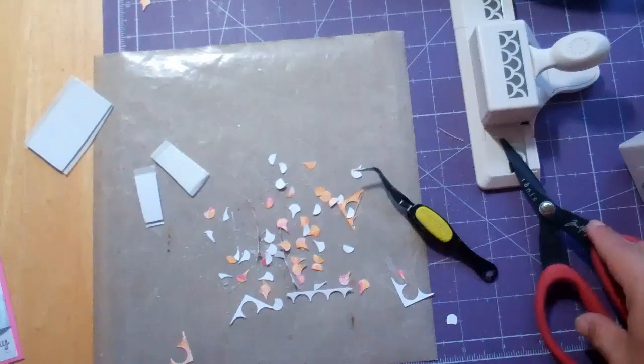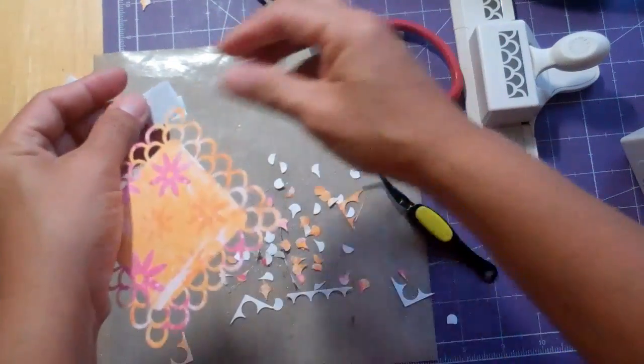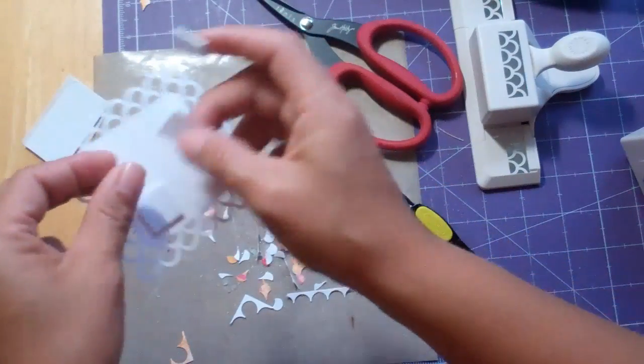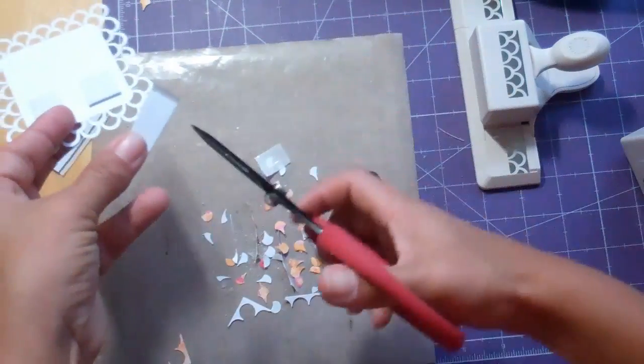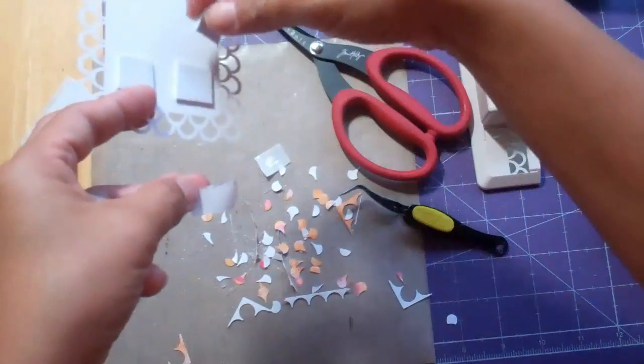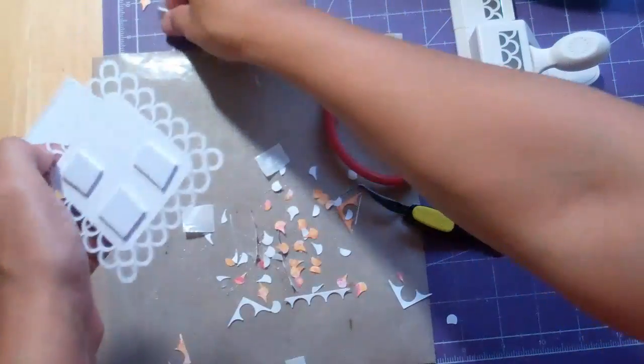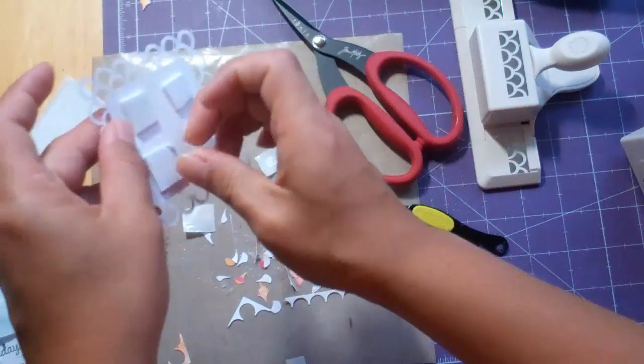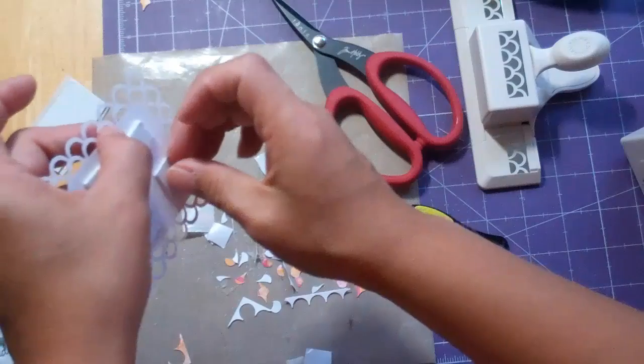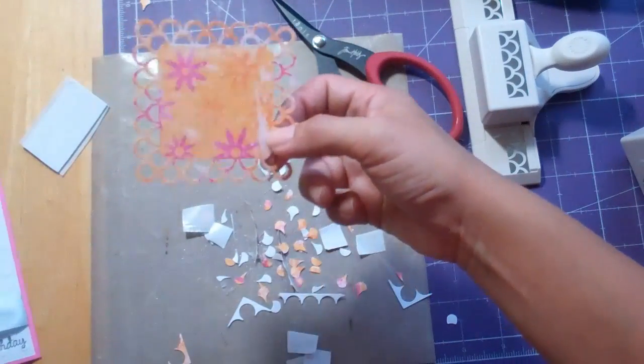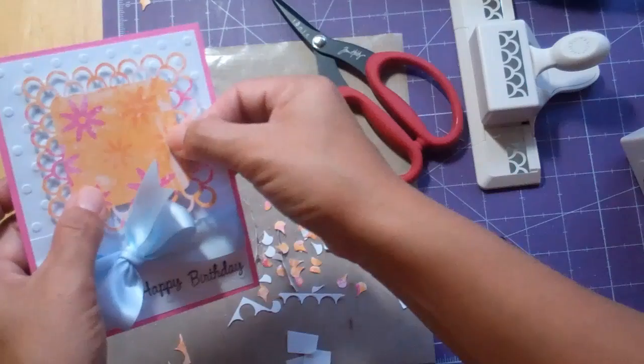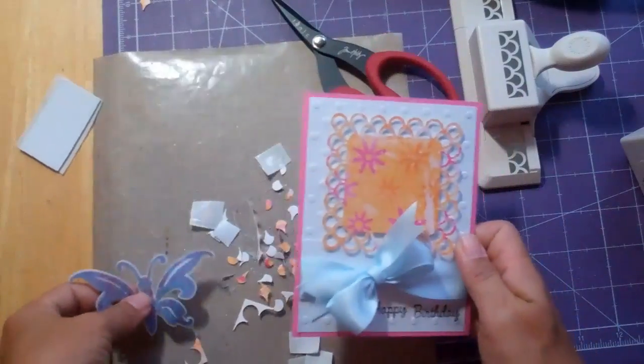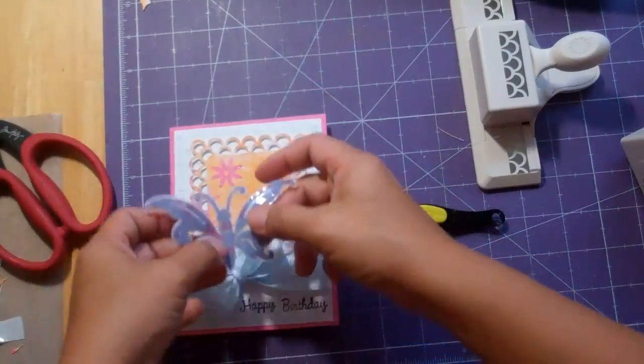Just going to pop up the corners. And this pattern paper, it's a DCWV stack, an older stack and I'm not sure what it's called. I got it in like a big lot or something like that so it doesn't really tell you what stack it came from but I know it's DCWV. So that'll go here centered here, and then we're going to pop up the butterfly.